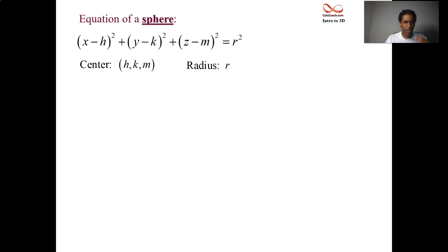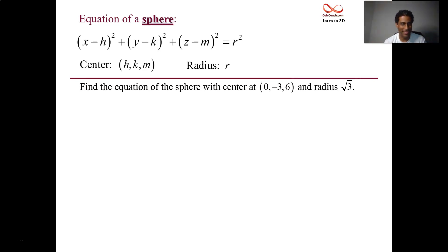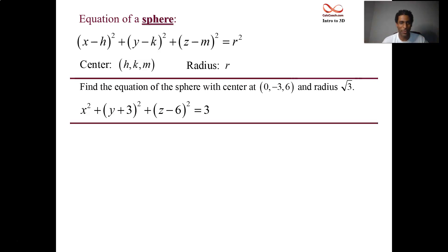Let's do some work with it. What if I give you a center and a radius? Find the equation of the sphere. It's almost too easy — just plug into the formula. Who's h, who's k, who's m, who's r? Plug them in. You have x minus nothing squared, y minus negative 3 squared, z minus 6 quantity squared, equal to — be careful — it's root 3, which when squared gives 3. That's too easy.